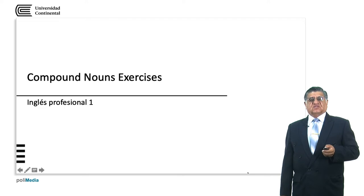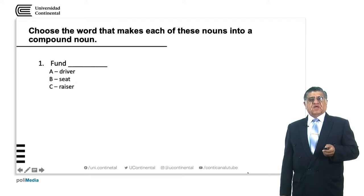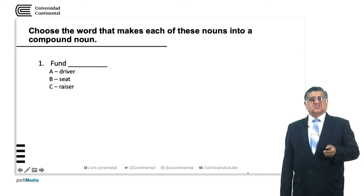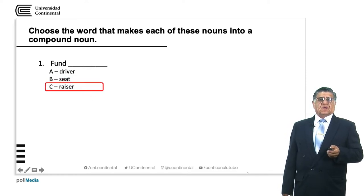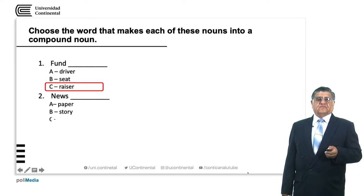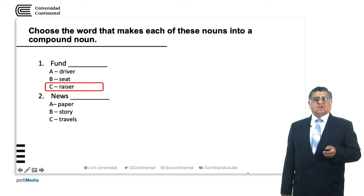Let's go through some exercises. Choose the word that makes each of these nouns into a compound noun. We have: fan driver, fan seat, fan racer — the answer is fan racer. Number two: newspaper, news story, news trouble — newspaper is the answer. As you see, sometimes compound nouns are already in use by us, but we didn't know they were compound nouns.